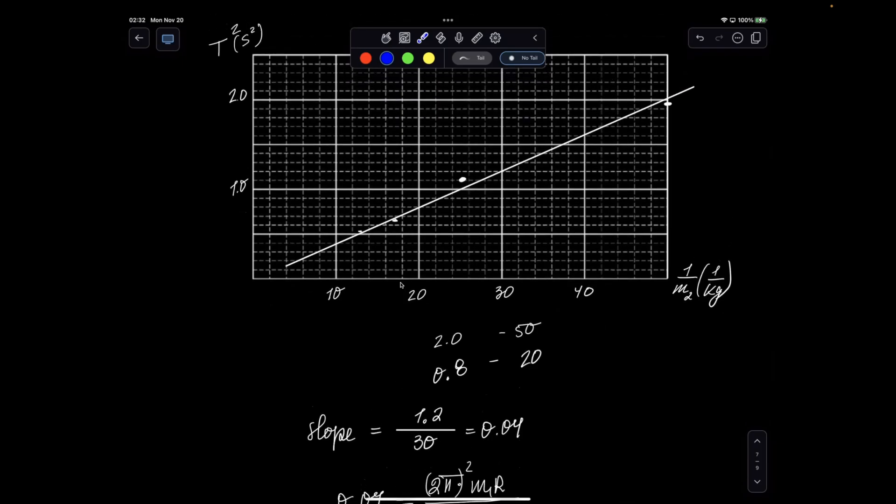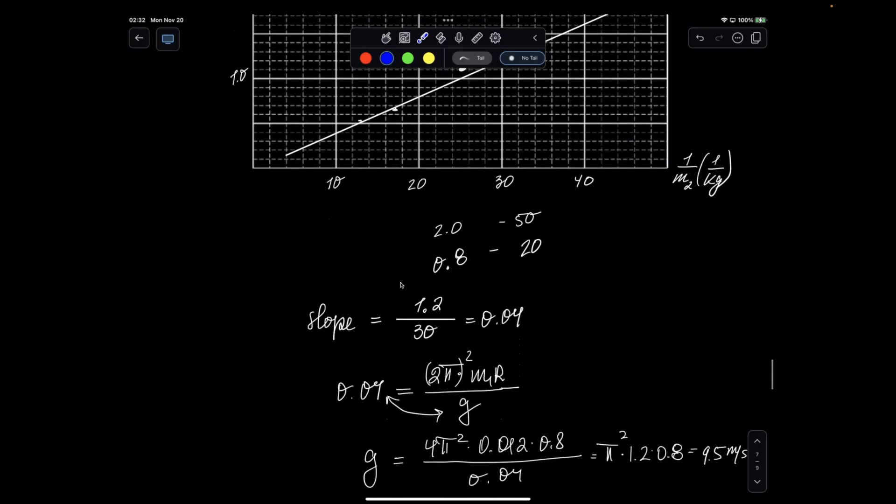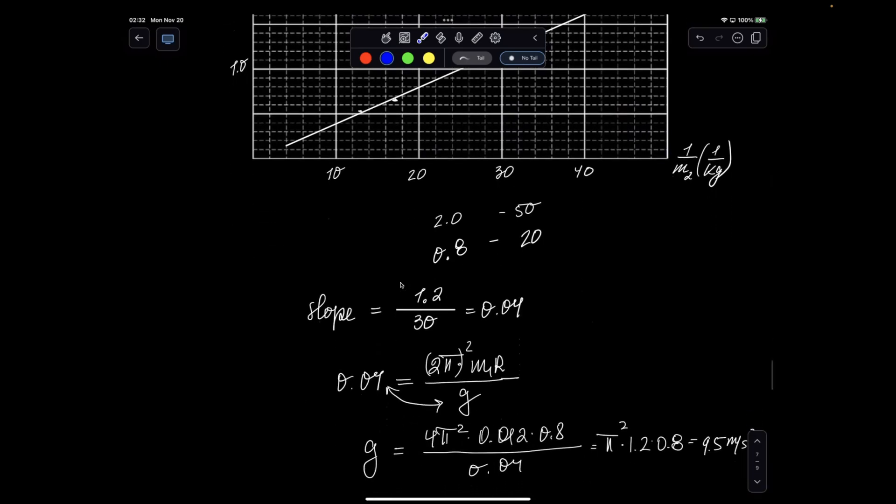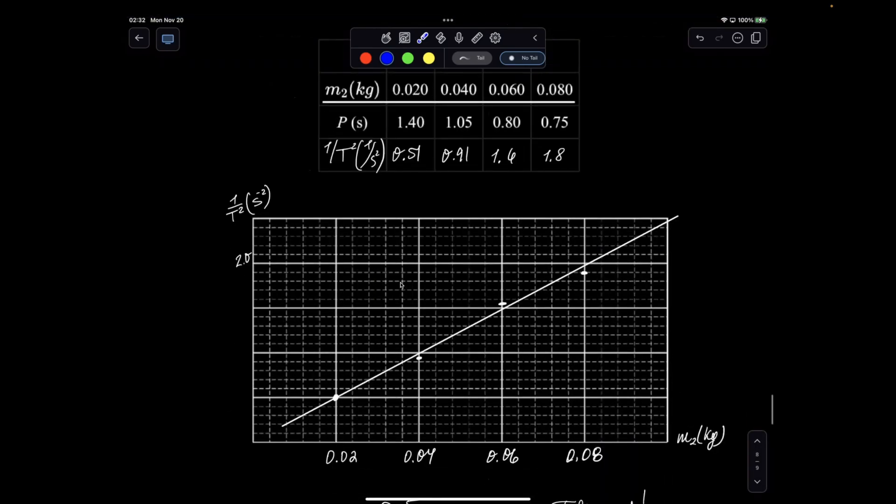So remember, when you do a best fit line, you cannot use the dots on your data sheet anymore. You're looking at where your graph actually hit. So I went from 20 to 50 for my run. And my rise went from 0.8 to about 2. So that was 1.2 over 30, which is again 0.04. So matching 9.5 meters per second squared.